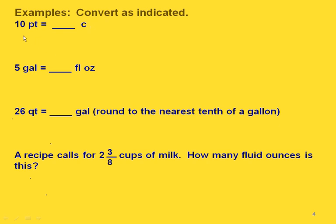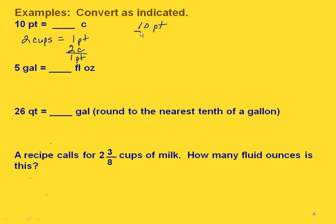If we want to convert from pints to cups, then we need a fraction that relates pints and cups. We know that 2 cups is equal to 1 pint. We write a fraction using these two values — we want pints on the bottom since that was our original unit, and cups on the top since that's the unit we're trying to get to. So our unit fraction looks like 2 cups over 1 pint. We multiply 10 pints over 1 times our unit fraction. Our units cancel out, and on the top we have 10 times 2 cups; on the bottom we only have 1s. That gives us 20 cups.